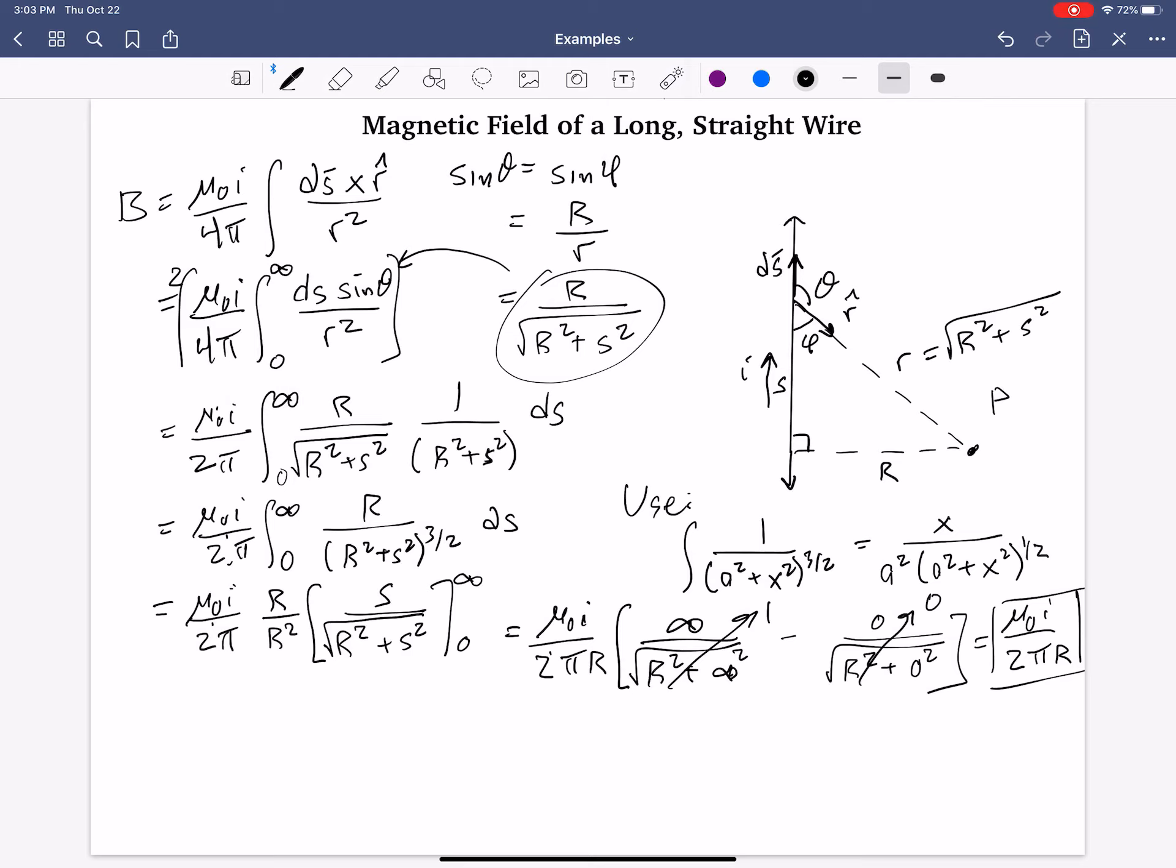Which way does the field point? Well, at point P, remember, we have a current. And if you put your thumb in the direction of the current, I'm going to try and write a hand here. If you put your thumb in the direction of the current, your fingers will point, will curve, in the direction of the magnetic field. So, in other words, the field will point into the screen. Right there. And then, on the left side of this wire, it will point out of the screen. That's the direction for the magnetic field at a point P to the right of an infinite wire with a current traveling up.